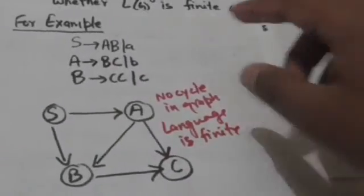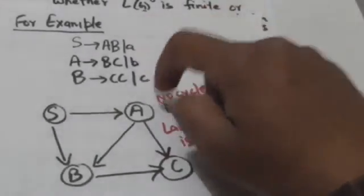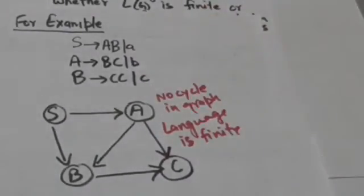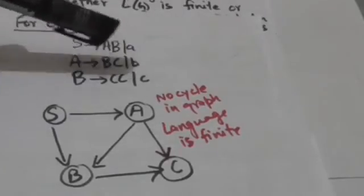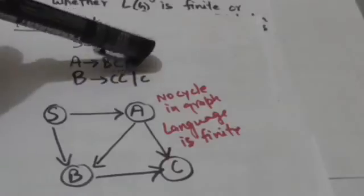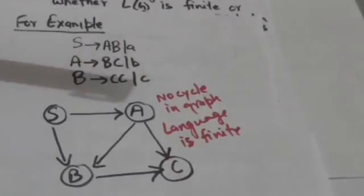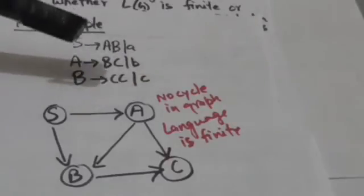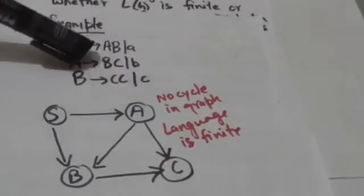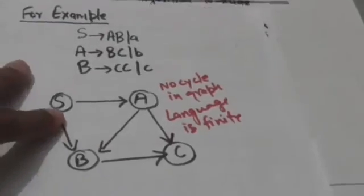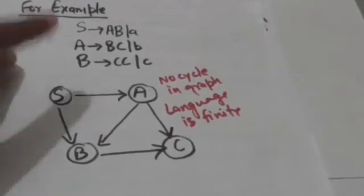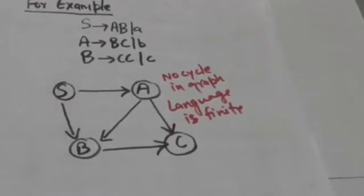Suppose there is a grammar G with productions: S derives AB, S derives A, A derives BC, A derives B, B derives C, B derives C. We will now construct the directed graph for this grammar.